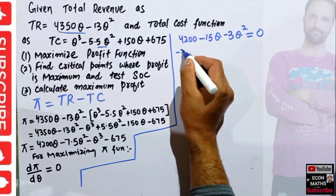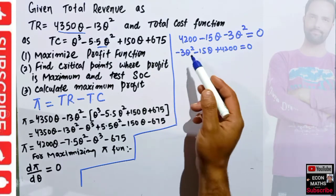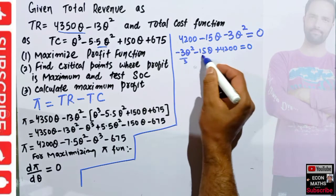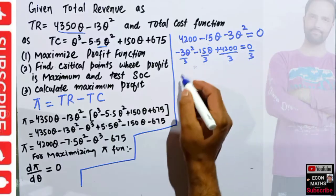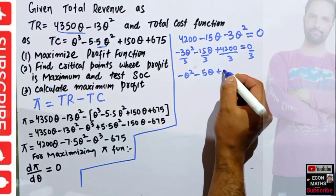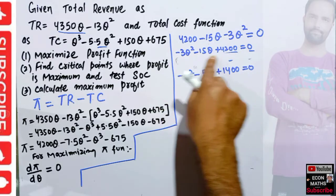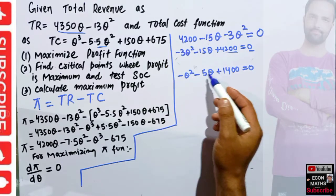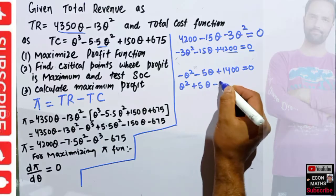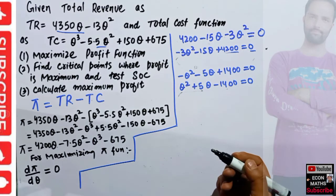Rewriting: −3Q² − 15Q + 4200 = 0. Dividing both sides by 3: −Q² − 5Q + 1400 = 0. Multiplying both sides by −1: Q² + 5Q − 1400 = 0. This is a quadratic equation, so we use the quadratic formula.